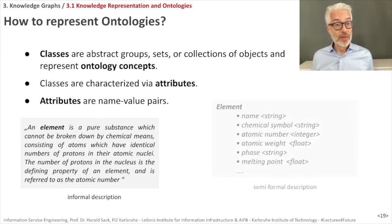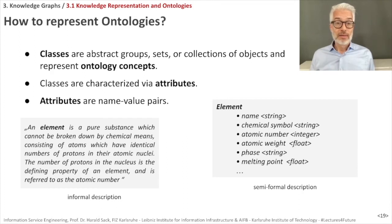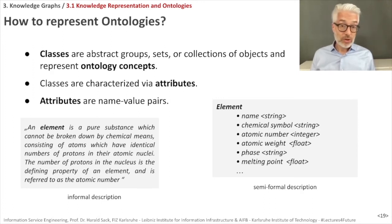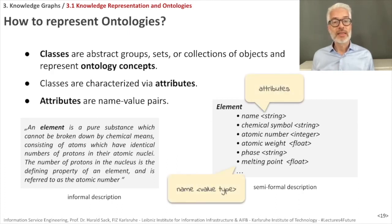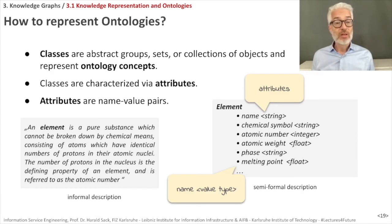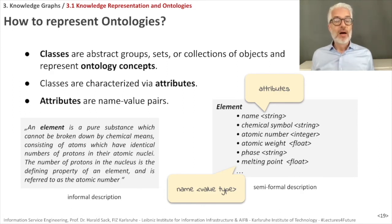We can go one step further. In a programming-language style, I define a class Element with attributes: name as a string, chemical symbol as a string, atomic number as an integer, atomic weight as a float, and so on. This is semi-formal. It becomes fully formal when we define it with the help of mathematical logic. The attributes consist of name-value pairs — here the name of the attribute could be melting point, and the value type, given in angle brackets, would be float.